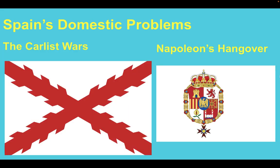Domestically, Spain was also having problems. There had been three Carlist Wars — a faction of Spanish society who believed the Carlist line of the Spanish royal family should be on the throne, and they also became rejecters of liberal or constitutional monarchy. There were also hangovers in Spain from the Napoleonic era. Fun fact: there was also a fourth Carlist War, which was sort of the Spanish Civil War.